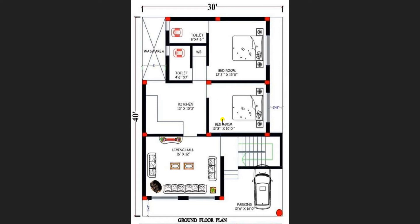One bedroom is of size 12 feet 3 inches by 10 feet — this is also a very comfortable bedroom size. Now returning back, you can see there is a common toilet available of dimension 4 feet 6 inches by 7 feet, and we have placed a wash basin here as well.